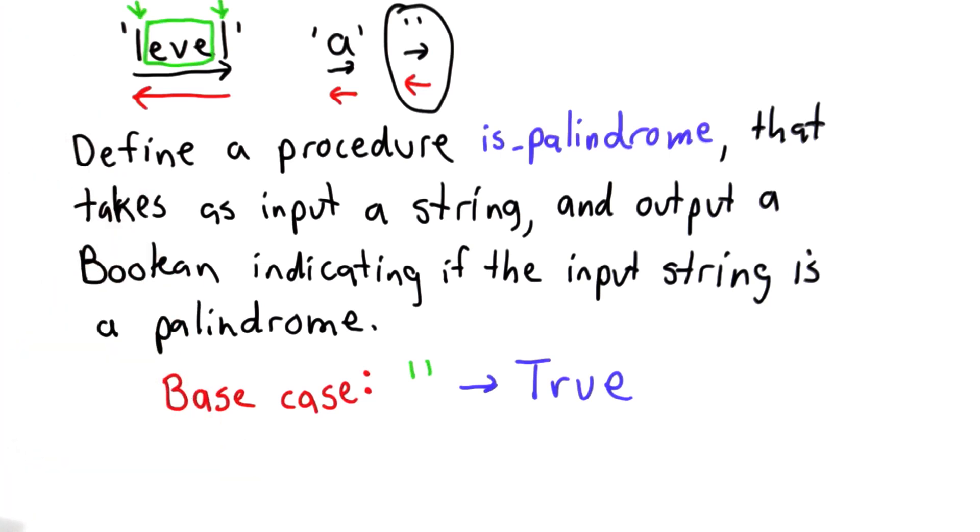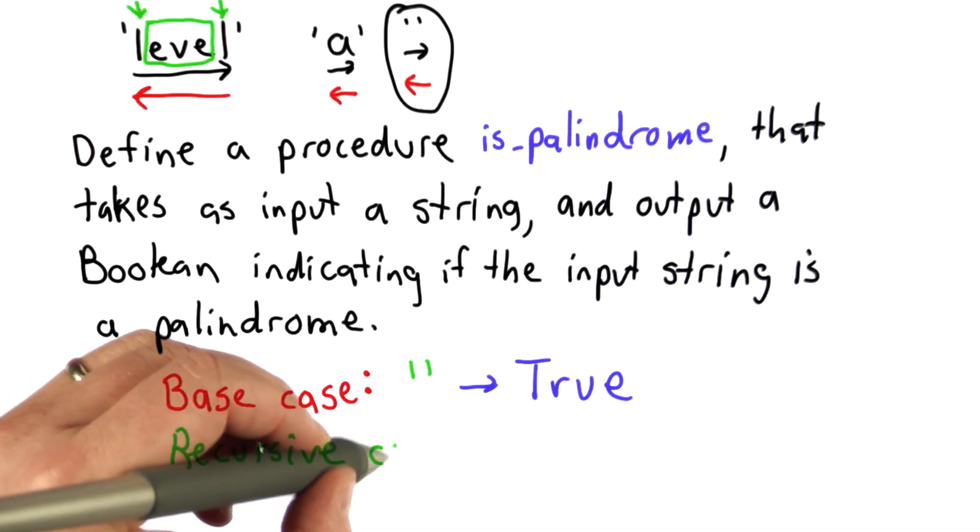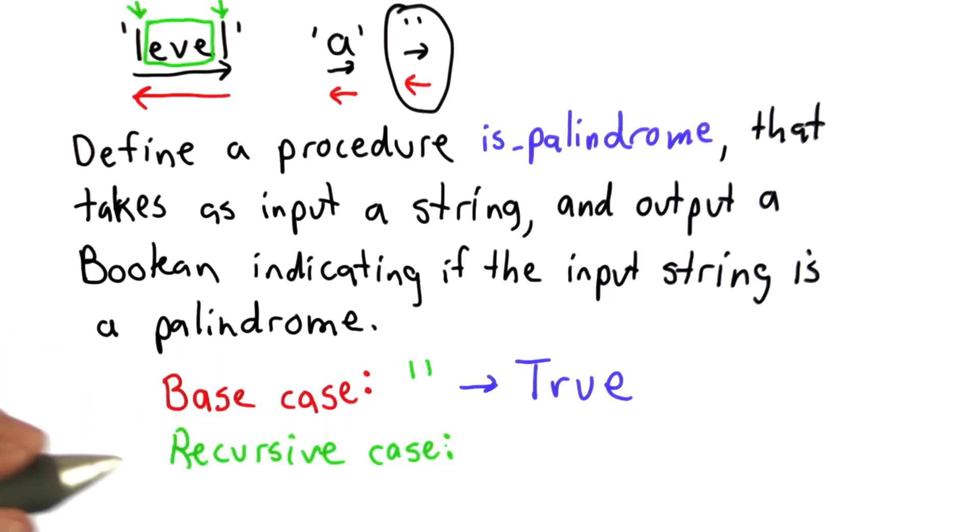So this is how we could break the question of testing whether a string is a palindrome into smaller steps, that our recursive case is going to test the first and the last character of the string, see if those are equal.